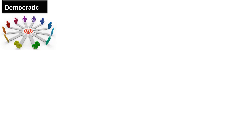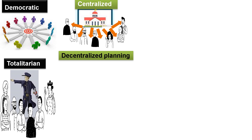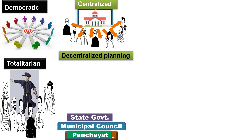Democratic planning: people have to accept the plan; it is a form of government planning where the government implements the plan. Centralized plan is one where the government makes the plan. Decentralized plan involves local institutions from bottom to top.